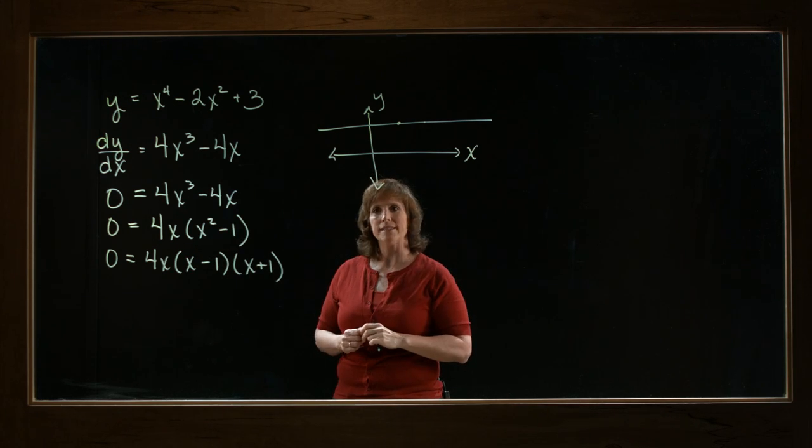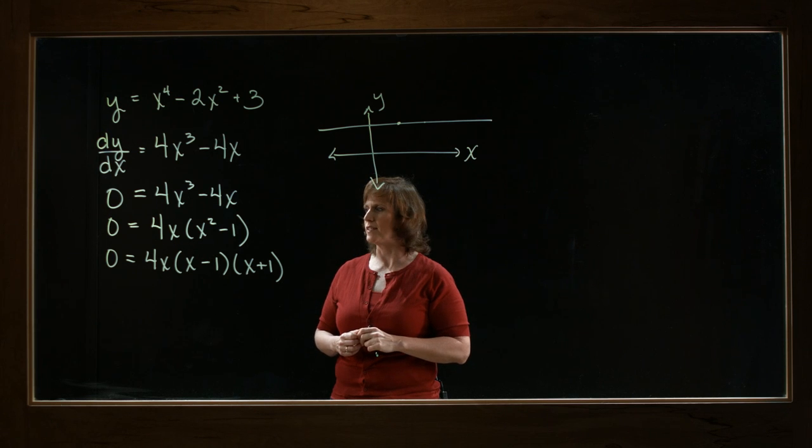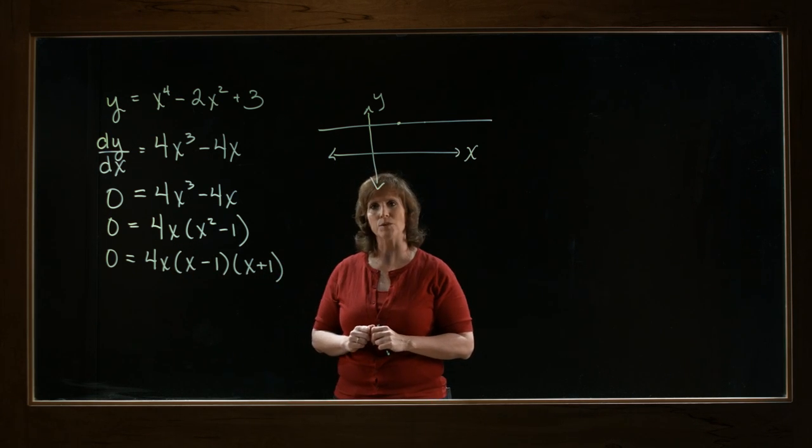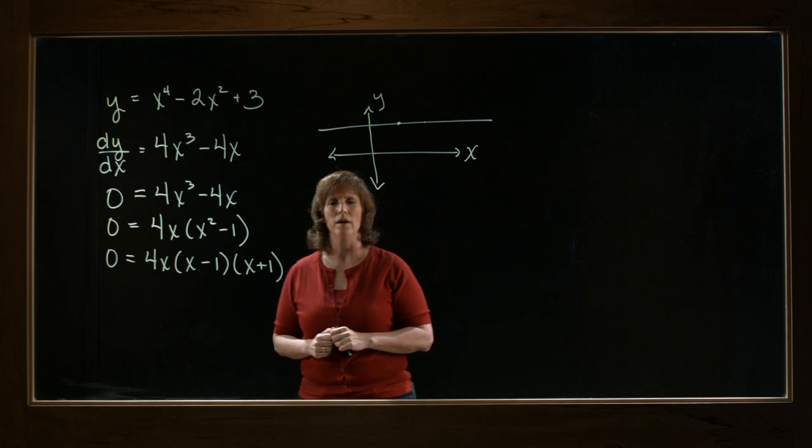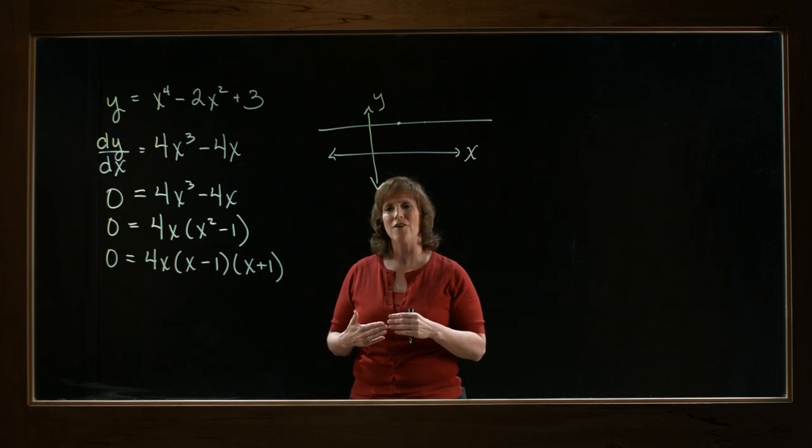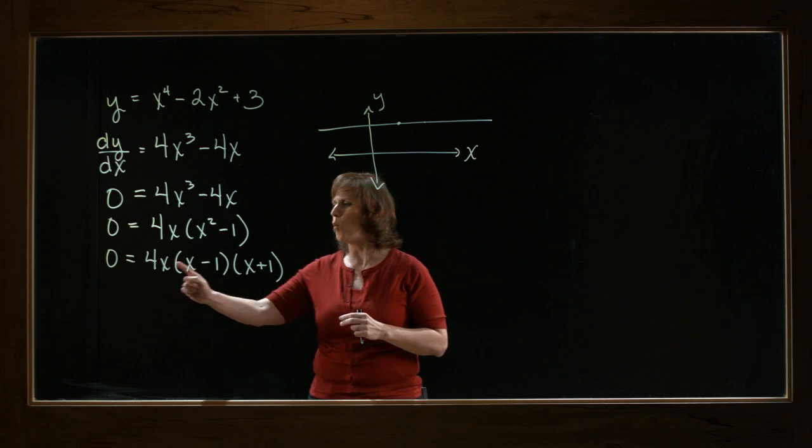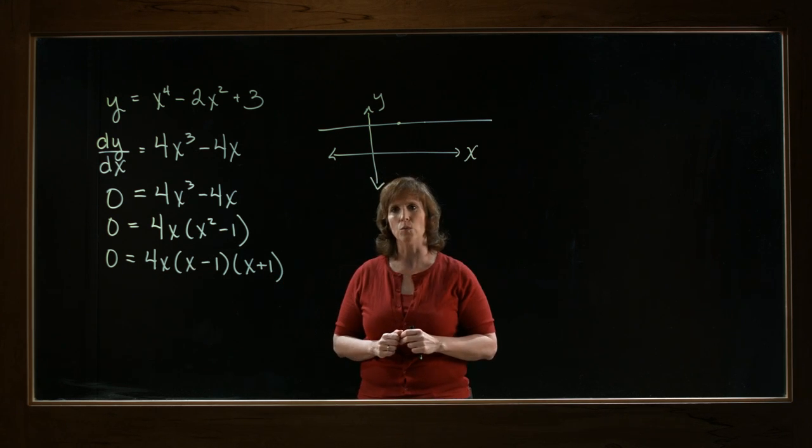I'm looking at that right hand side and I realize it's completely factored at this point. And what do I have? I have three different factors multiplied together that equals zero. When you multiply numbers together and the answer is zero, there's only one way that can happen, and that's if one of these pieces is equal to zero.